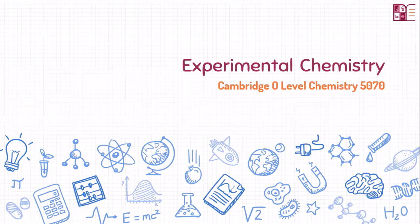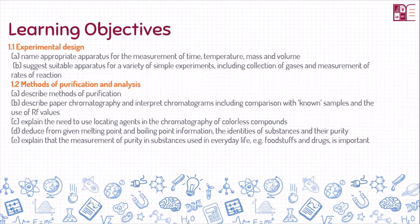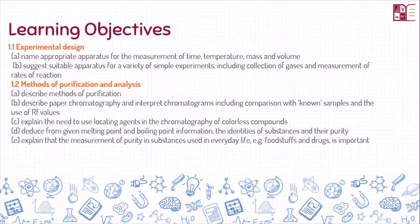Experimental chemistry includes everything about the different apparatuses used in experiments. The learning objectives for today's class: I'm going to name appropriate apparatuses used for measurement of time, temperature, mass, and volume. I'm also going to suggest suitable apparatuses for simple experiments such as collection of gases or measurement of rates of reaction. We'll also discuss methods of purification used to purify mixtures, paper chromatography, thin layer chromatography, and retention factor (Rf) values, and the significance of locating agents when using chromatography with colorless compounds.